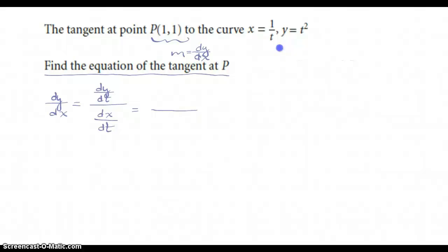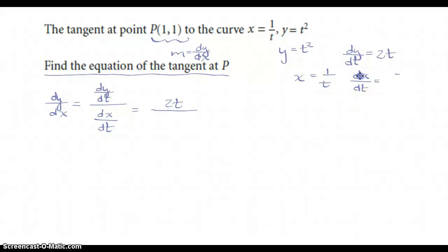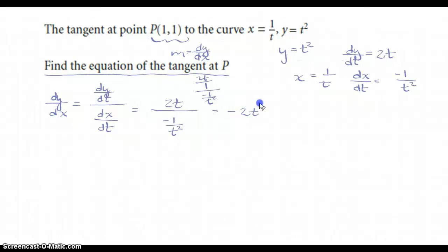The first thing we do is go to our y-function. If y = t², then dy/dt = 2t — that's our numerator. If x = 1/t, then dx/dt = −1/t². Cleaning that up: dy/dx = 2t ÷ (−1/t²) = 2t × (−t²) = −2t³. There is dy/dx — there is our slope, but notice it's in terms of t.